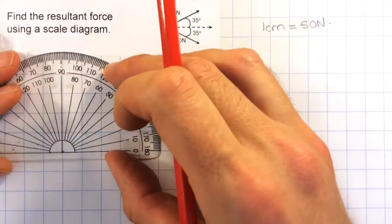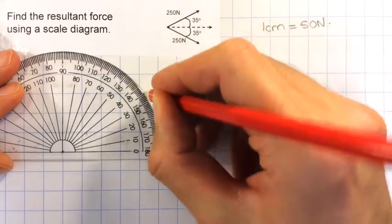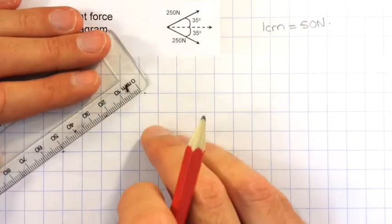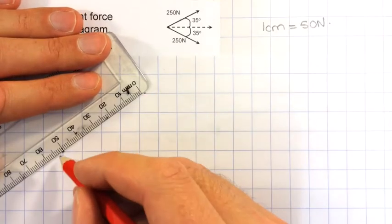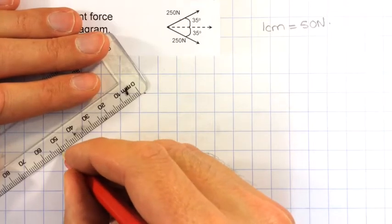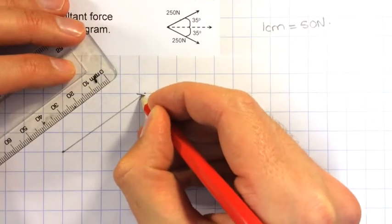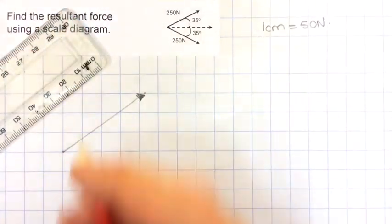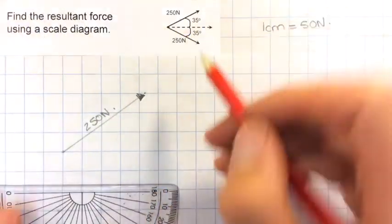First job is to get the protractor, carefully line it up with my starting point there, and mark off 35 degrees. Then I need to draw that 5 cm long so it is representing 250 N. Get that all nicely lined up, add my arrowhead there, and then I can label that 250 N.